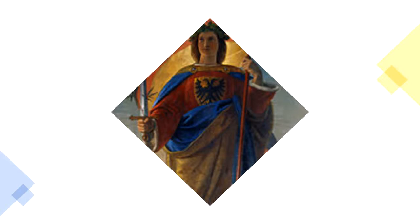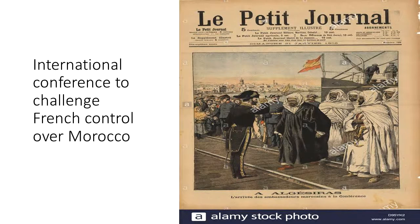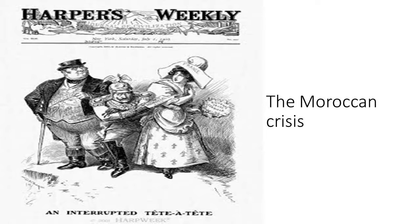Acknowledging growing German power, British leaders organized their own alliance and agreements. They improved their relations with the United States, concluded an alliance with Japan in 1902, and formed the Anglo-French Entente in 1904. In 1906, Germany demanded an international conference to challenge French control over Morocco. The conference failed and Germany's attitude forced Britain and France closer together. The Moroccan crisis was something of a diplomatic revolution — Britain, France, Russia, and even the United States began to view Germany as a potential threat, while German leaders began to suspect sinister plots to encircle Germany and block its development as a world power.